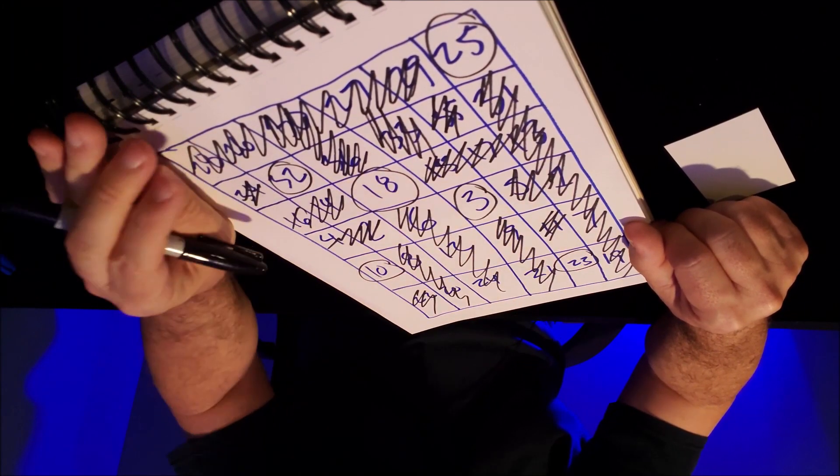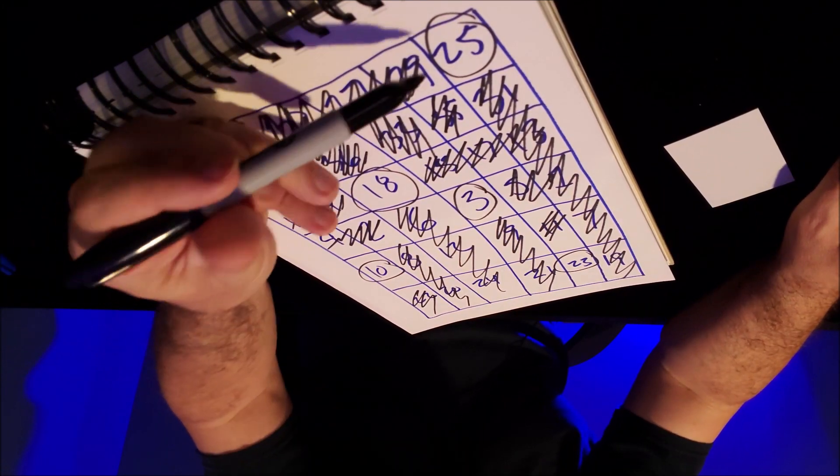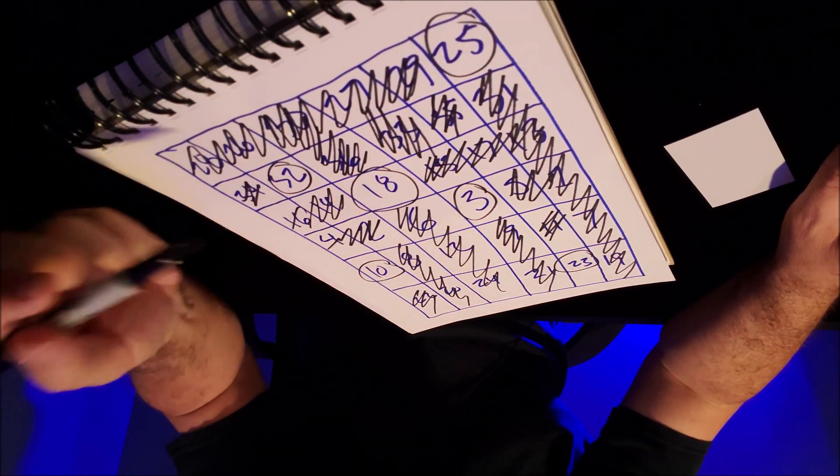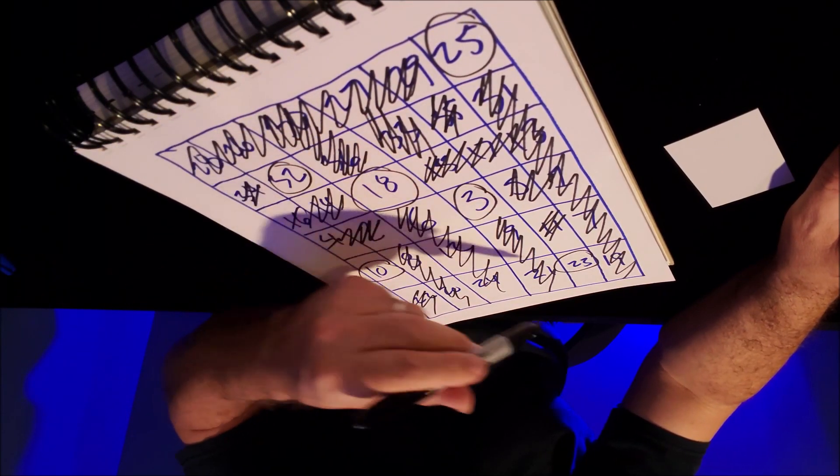That means we'll cross out these. Now they circle 32, so we cross out that and that, and then we cross out all the ones that go down. Then they circle 10, so we cross out 11 and 22, which means they only have 23 left. Which means they've circled this, this, this, this, this, and this. They circled 25, 32, 18, 3, 10, and 23.